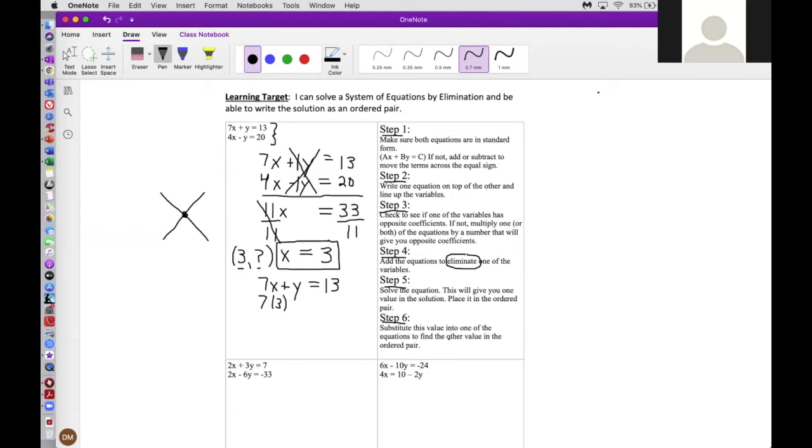And now, step 6 says: substitute this value into one of the equations to find the other value in the ordered pair. So, that's what I'm doing right now. 7 times 3 plus Y equals 13. 7 times 3 is equal to 21.